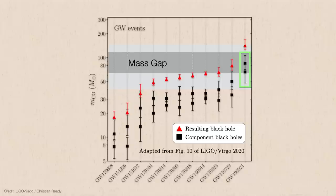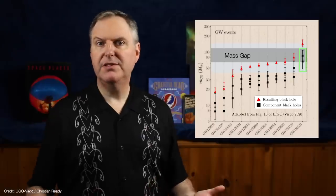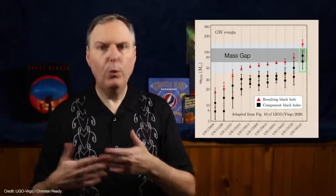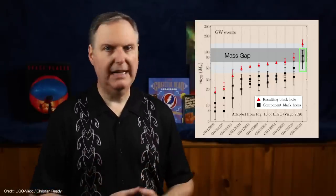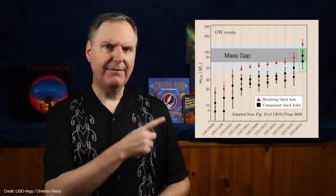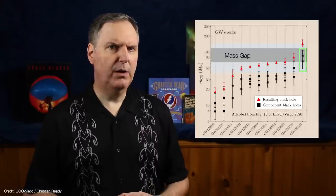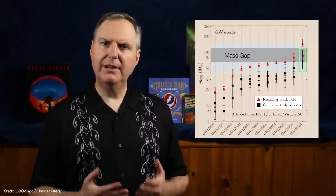However, the black holes involved in this new merger are around 66 and 85 solar masses. Now, given the uncertainties involved, it's certainly possible that the 66 solar mass black hole was, in fact, formed in a core-collapse supernova. But that 85 solar mass black hole is firmly in the pair-instability mass gap. So where did that come from?